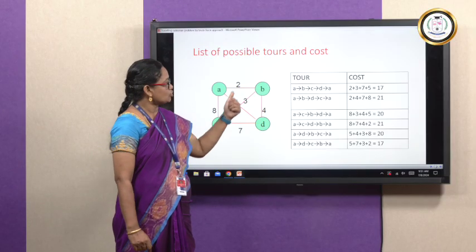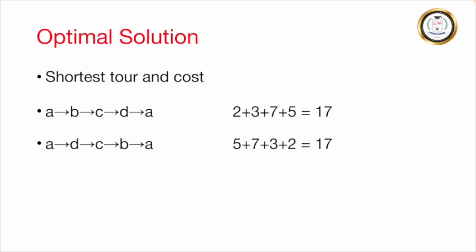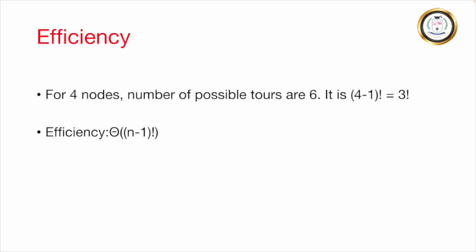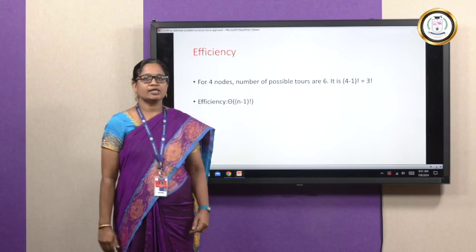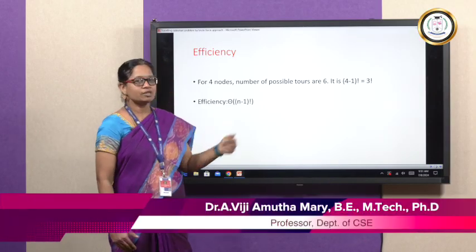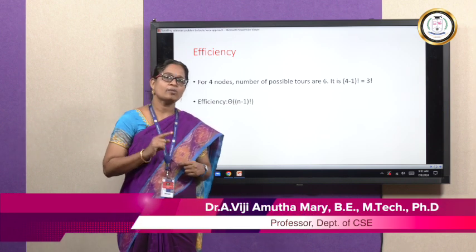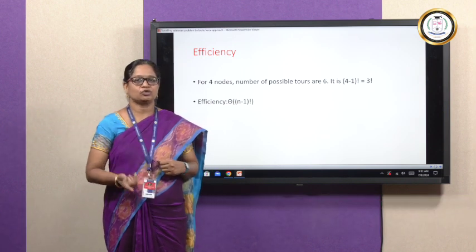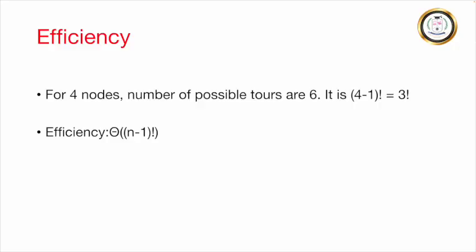The tour A, B, C, D, A has an associated cost of 17, and the tour A, D, C, B, A also has the same cost — so this is the shortest tour and the optimal solution. Now let us calculate the efficiency: if there are 4 vertices, the number of possible tours is (4-1)! = 3! = 6. In general, for n nodes the efficiency is (n-1)! .